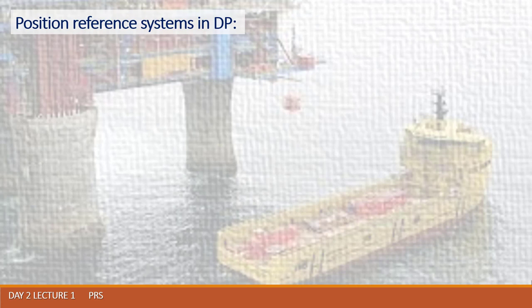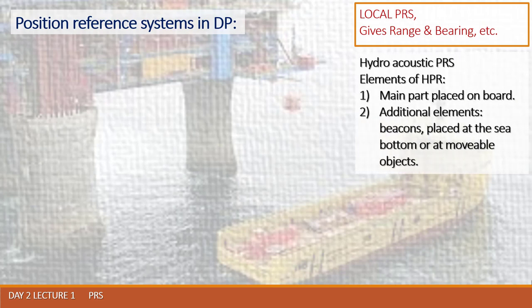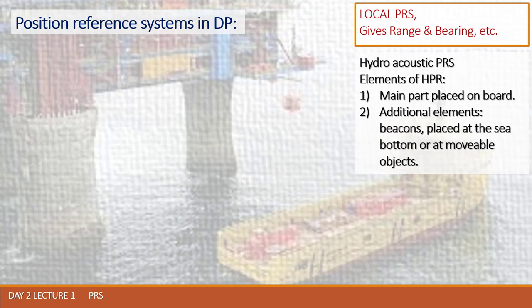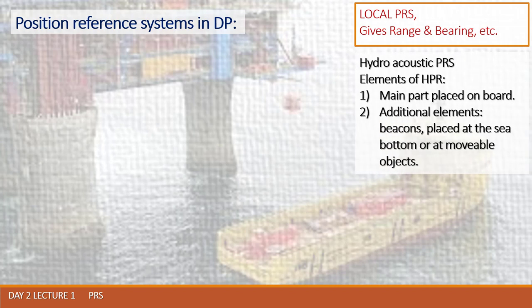Finally, gents, we've reached the point where we are going to discuss the main elements of Hydro Acoustic equipment. Generally, a Hydro Acoustic positioning system (HPR) consists of two main elements. First, the main part placed on board. Second, additional elements which are beacons placed at the sea bottom or at a movable object — a diver or an ROV which keeps the HPR beacon mounted on its frame.